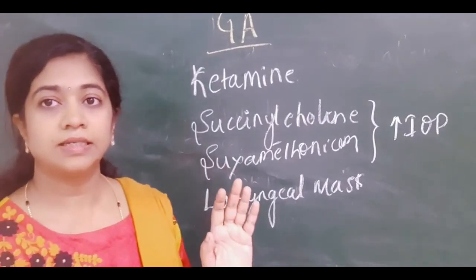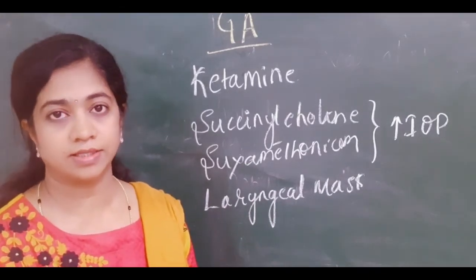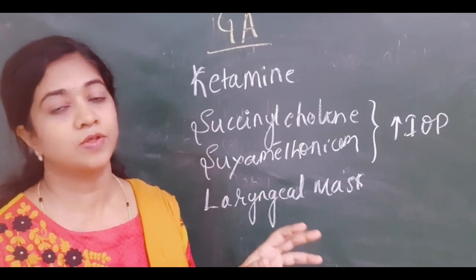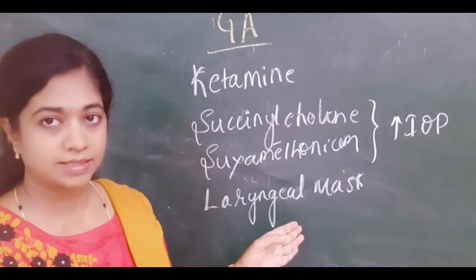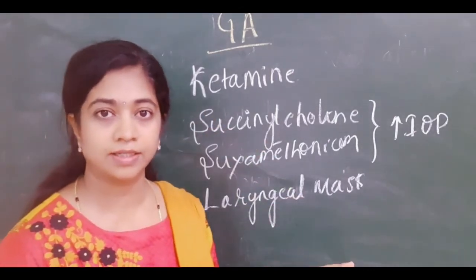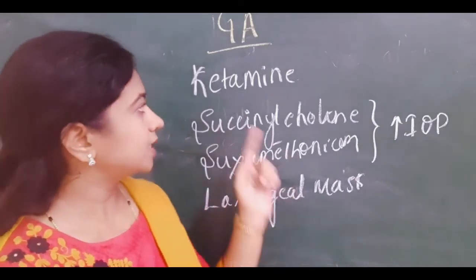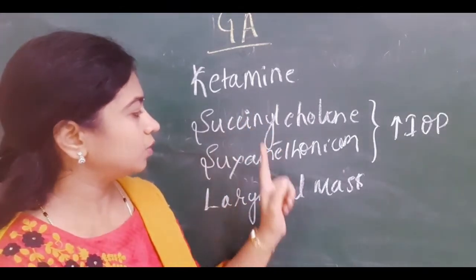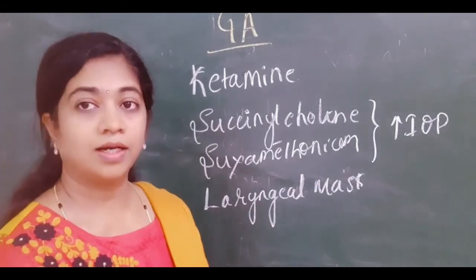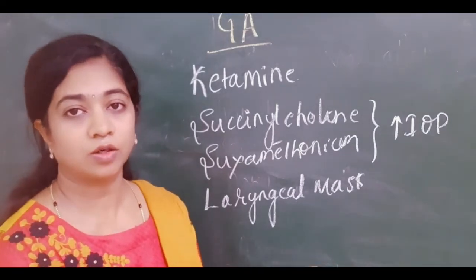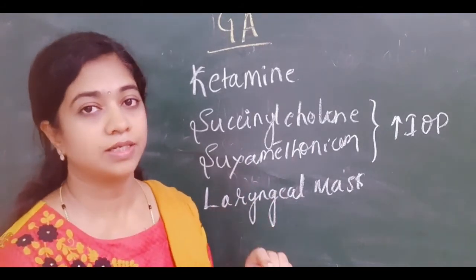Coming to general anesthetic drugs — this is important because most congenital glaucoma cases need examination under anesthesia, but these anesthetic drugs can themselves influence IOP and give various results. Most general anesthetic drugs used to sedate or anesthetize the patient usually drop or decrease the intraocular pressure, except ketamine. Succinylcholine transiently increases IOP because of the contraction of the extraocular muscles. Laryngeal masks have less effect on IOP compared to endotracheal tubes. Keep these points in mind when taking a patient under general anesthesia.